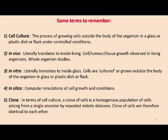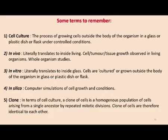Let us look at some terms to remember when talking about animal cell culture. Cell culture is a process of growing cells outside the body of an organism in a glass or plastic dish or flask under controlled environmental conditions — controlled in terms of temperature, pH, and oxygen or carbon dioxide availability — because in our body cells grow under very controlled conditions. In vivo describes the study of cells or tumors inside a living organism, such as how a tumor is growing in a human being or how cells are dividing in a mouse.